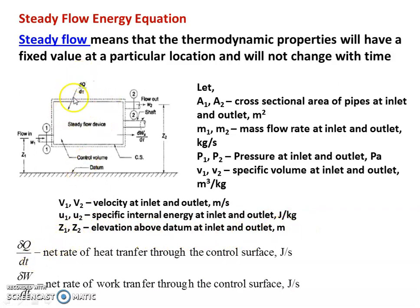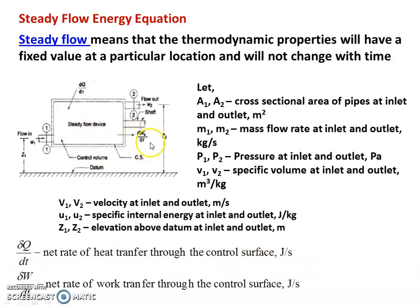There is a heat transfer: del Q by DT is the net rate of heat transfer through the control surface in joules per second. There is also work transfer: del W by DT is the net rate of work transfer through the control surface. Heat is supplied to the system and work is done by the system.